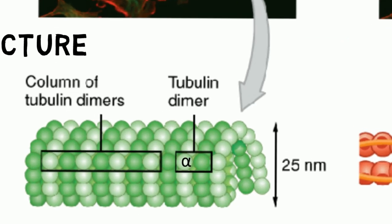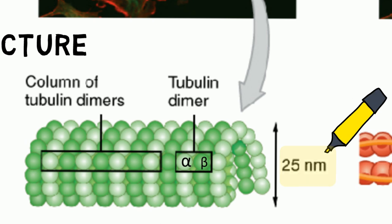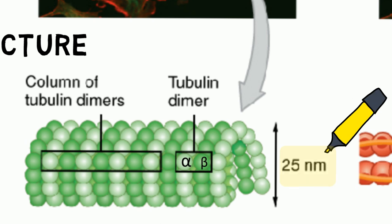Microtubules are composed of alpha and beta tubulin that are arranged in long hollow cylinders. They are the largest component at 25 nm.